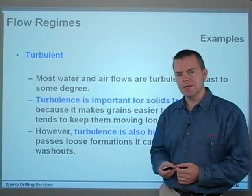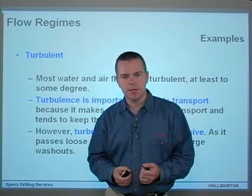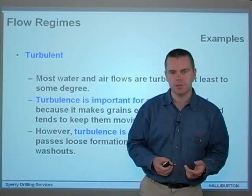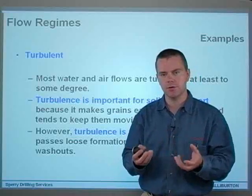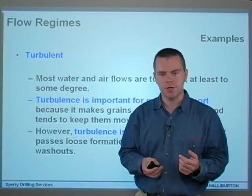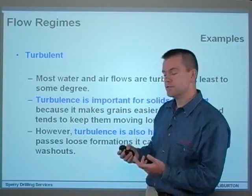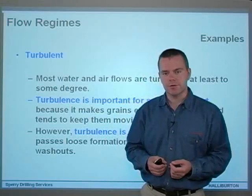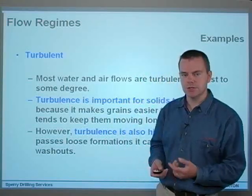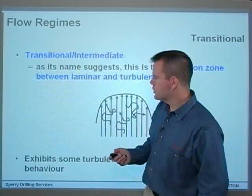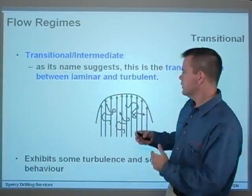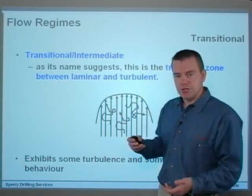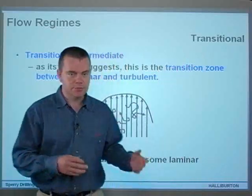Most water and air flows are turbulent to some degree. Turbulence is very important for solid transport because it makes grains easier to transport and tends to keep them in suspension longer than laminar flow, usually because it's faster as well. One of the downsides of turbulent flow is that it's highly erosive, and as it passes loose formations it can cause large washouts. Between laminar and turbulent flow, there's also a transitional zone — as its name suggests, it's a transition zone between the two flow regimes.